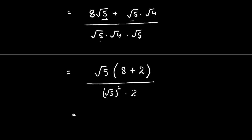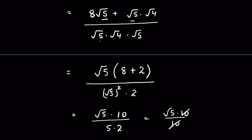Square root of 5 squared means the square and square root cancel, giving 5. So the denominator is 5 times 2, which is 10. The numerator is square root of 5 times 10, upon 10, and the 10s cancel. The answer is square root of 5. Let me know your answer in the comment section — like and subscribe, thanks for watching.